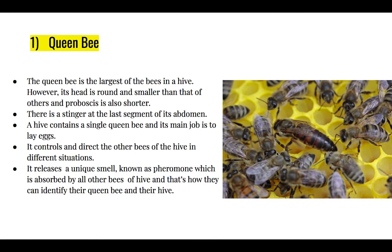The queen bee can be easily identified in a beehive because it is the largest one. Though its body is much bigger than other bees, its head is comparatively small and the proboscis, meaning mouth parts, are also very short. It has a stinger at the end of the abdomen.